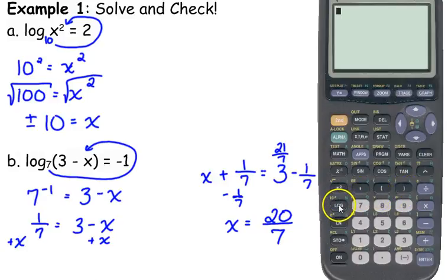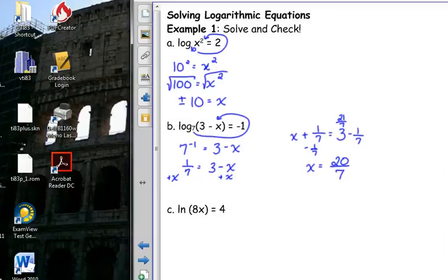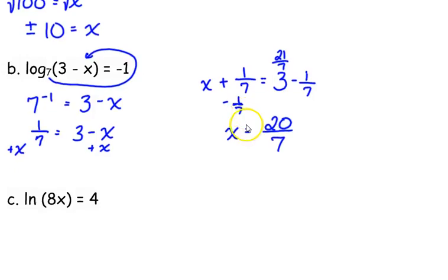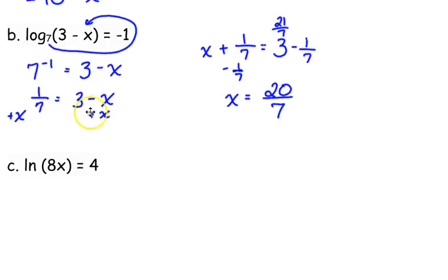Remember, if you're checking this, since the base is different, if you don't have one of the calculators that does allow you to change the base, then you've got to type it in as the log of the big part, 3 minus 20 over 7, divided by the log of the base. And that should give you negative 1.